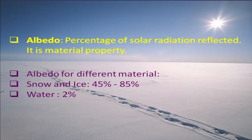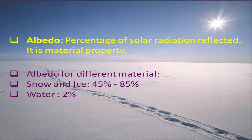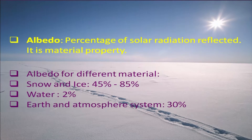Water has an albedo of hardly 2 percent, meaning the radiation coming from the sun is mostly absorbed and hardly 2 percent is reflected back to the atmosphere. The Earth and atmosphere system in total reflects only 30 percent.